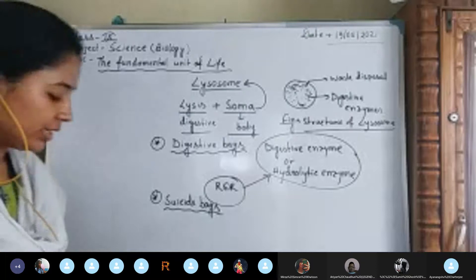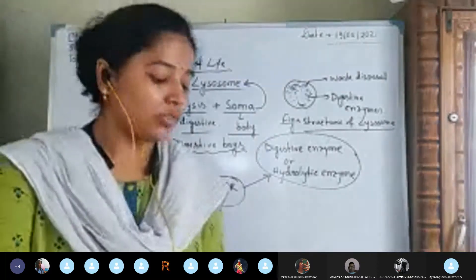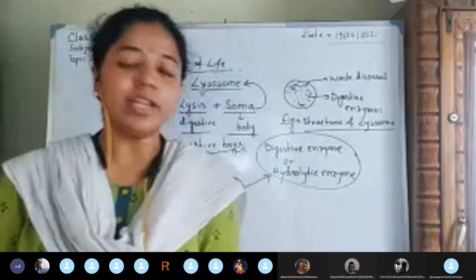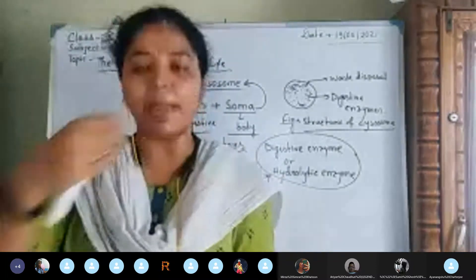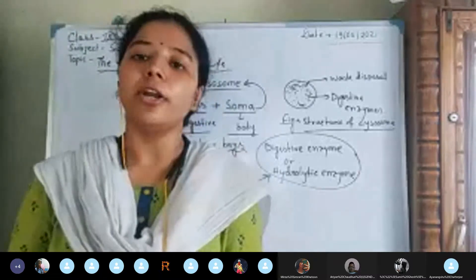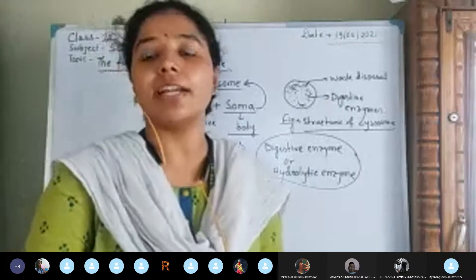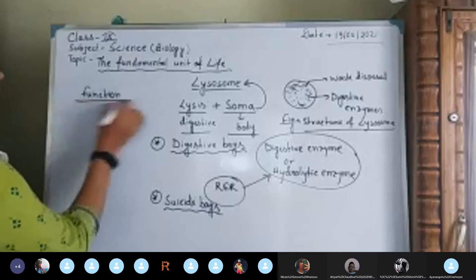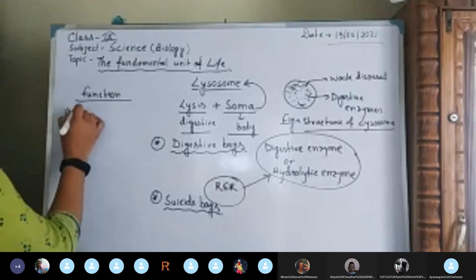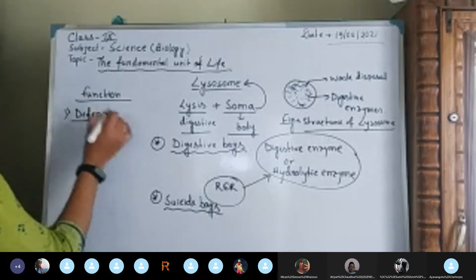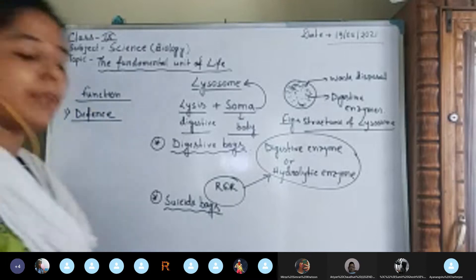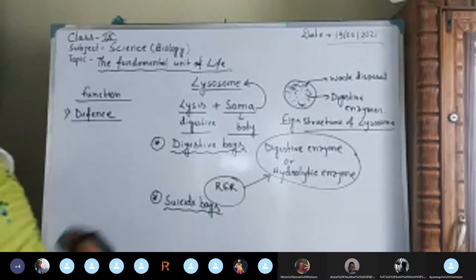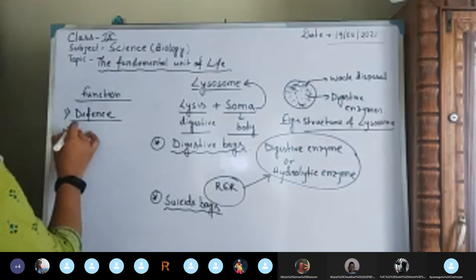Now for functions: the first function is defense mechanism. Lysosomes help in the destruction of foreign particles like bacteria or viruses, so they provide protection to the body. That is why we say they act as a defense mechanism.